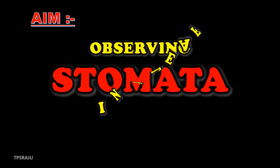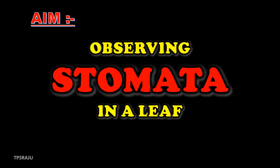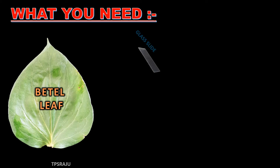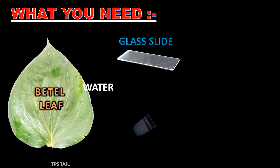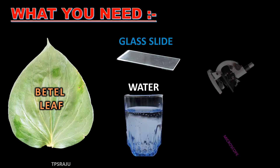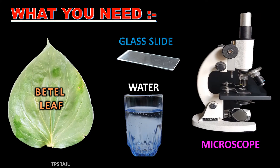What is the aim of today's activity? The aim is observing stomata in a leaf. For doing this activity, we need some materials such as a betel leaf, glass slide, water, and a microscope.